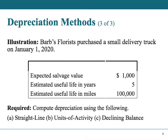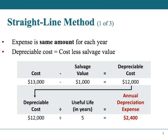Here's our example data: a small truck with an estimated salvage value of $1,000, useful life of 5 years, and useful life in miles of 100,000. Straight-line will expense or allocate the same amount each year. The formula is: depreciable cost divided by useful life in years, where depreciable cost equals cost minus salvage value. So: cost minus salvage value, divided by useful life. This gives you the annual depreciation expense. Using our data, the cost was $13,000, so every year we come up with $2,400 — that's one-fifth of the depreciable cost each year.